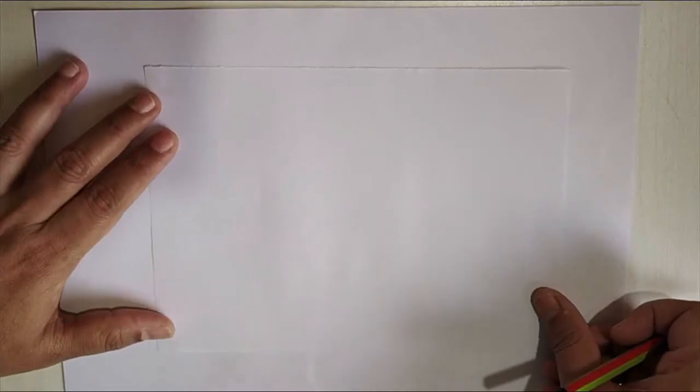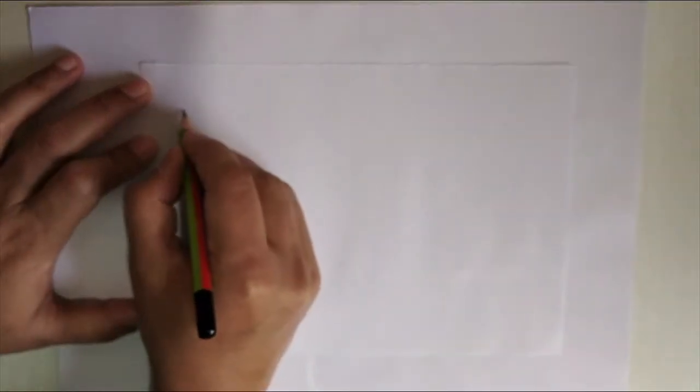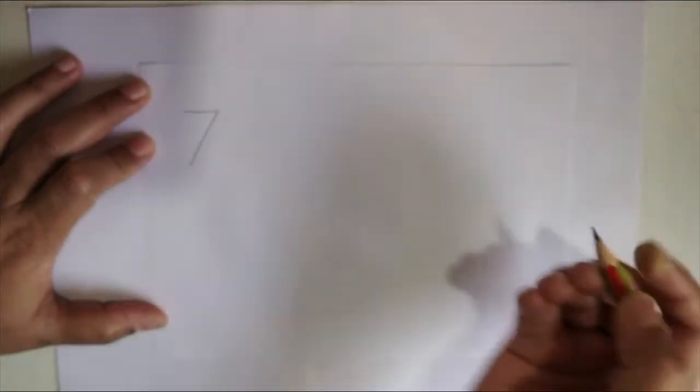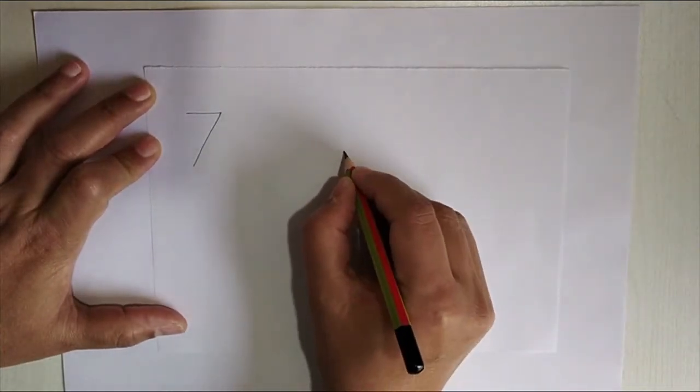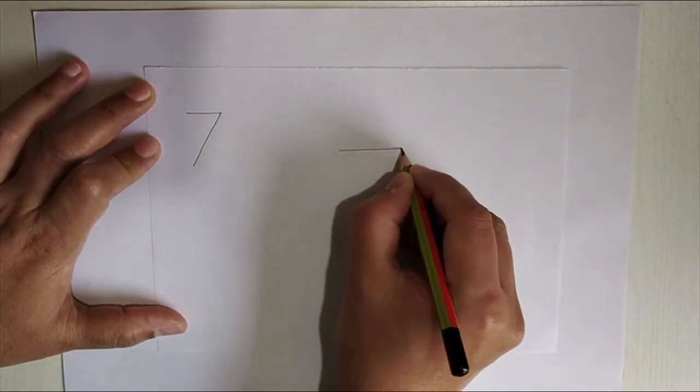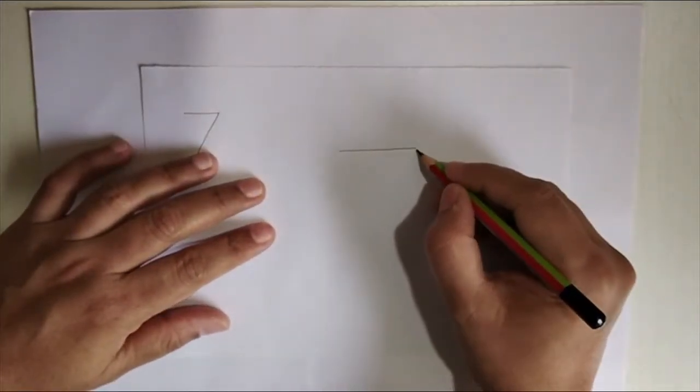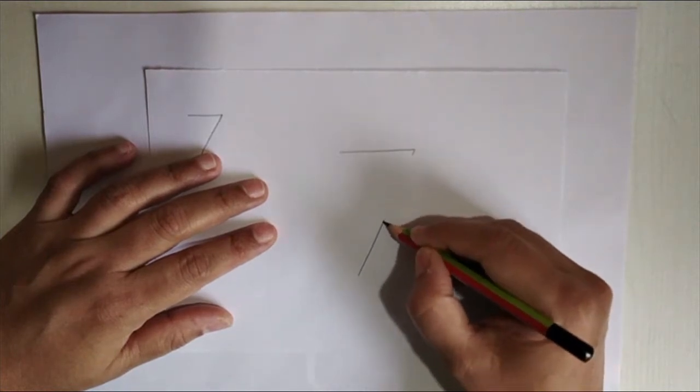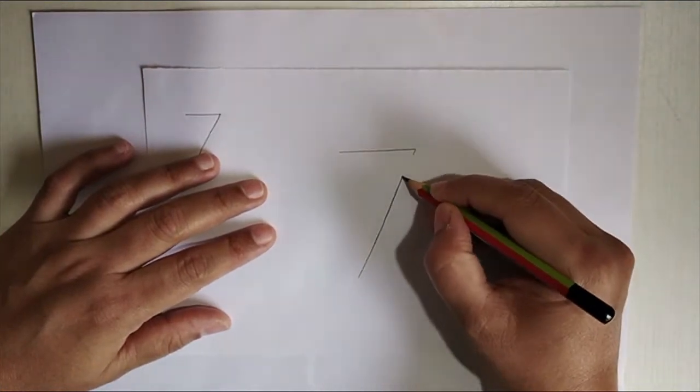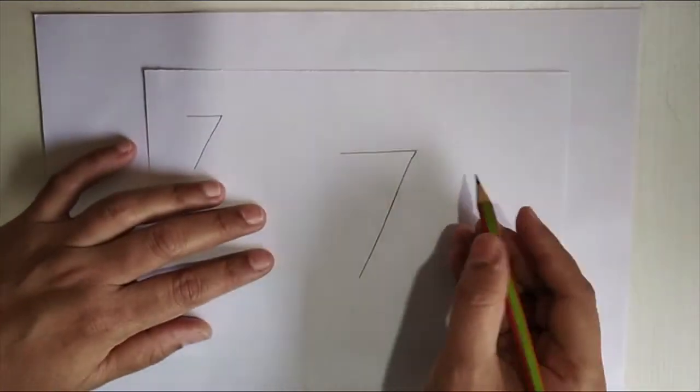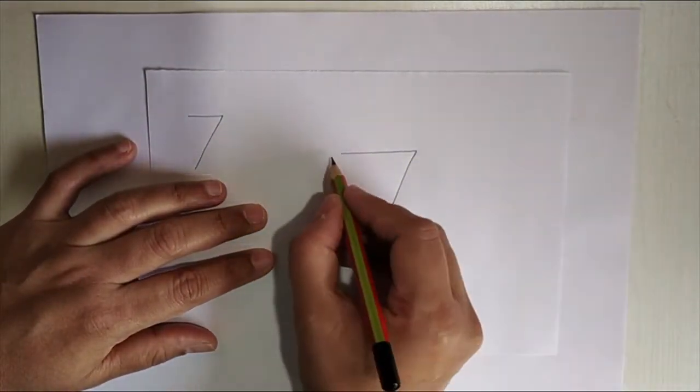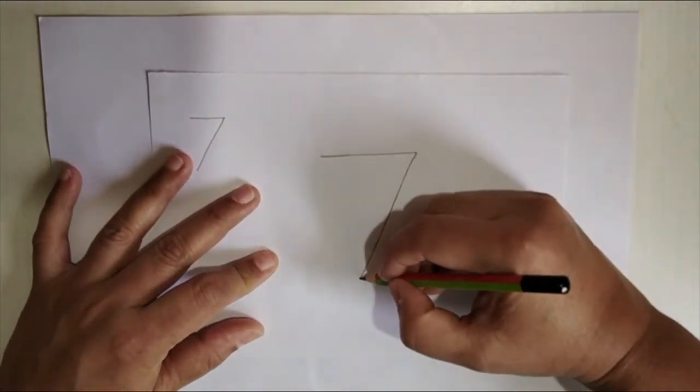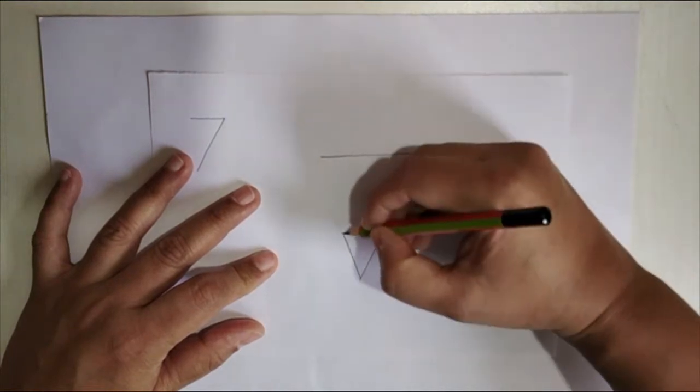The next number is 7. Now, we will draw number 7. And join it across with a slanting line.